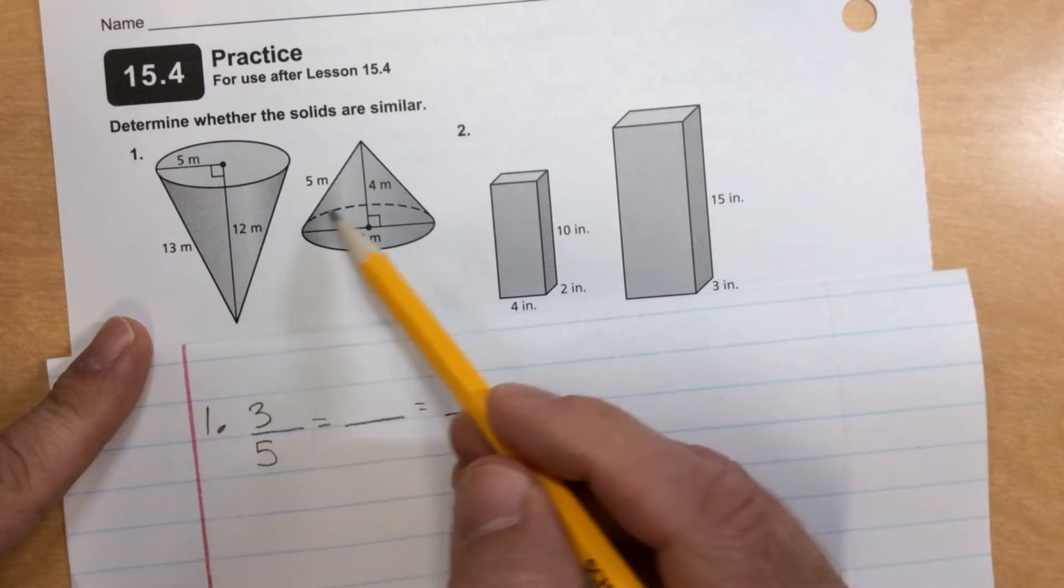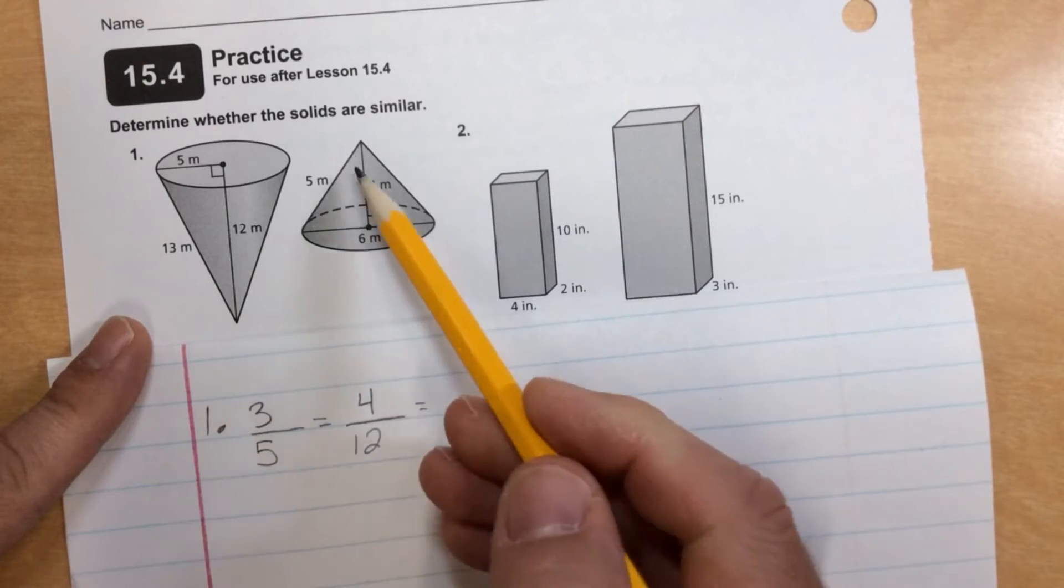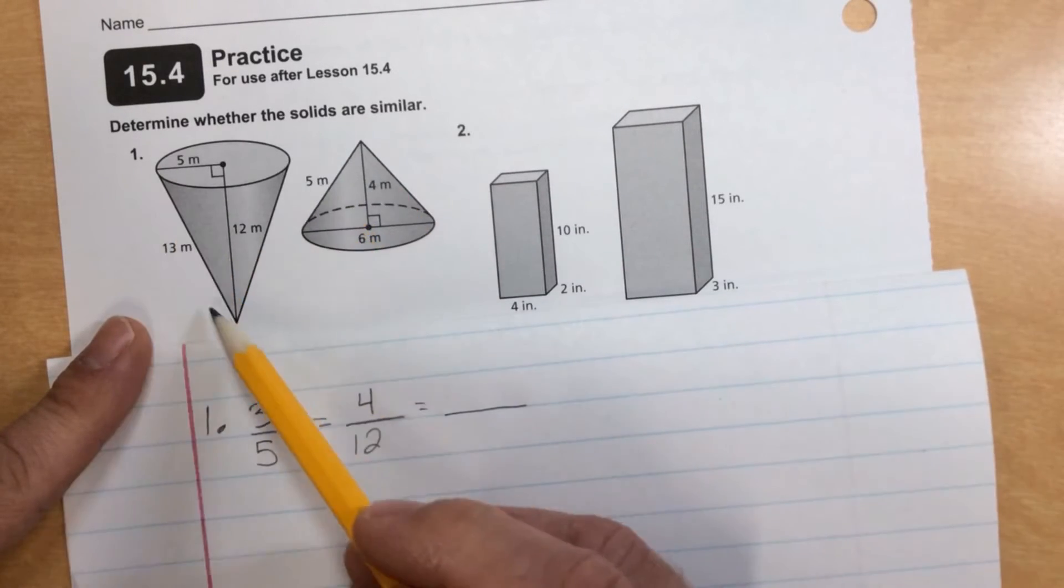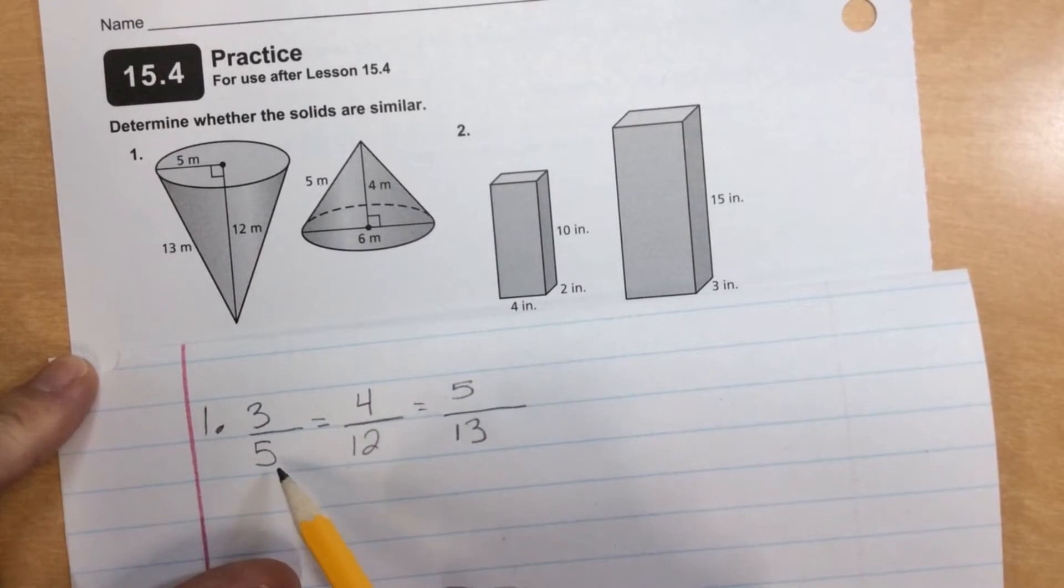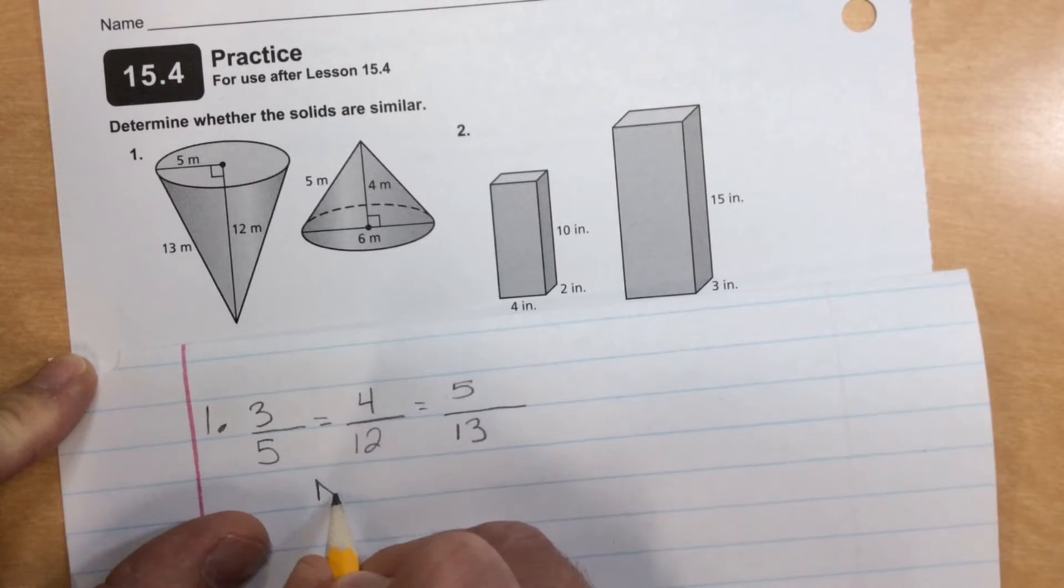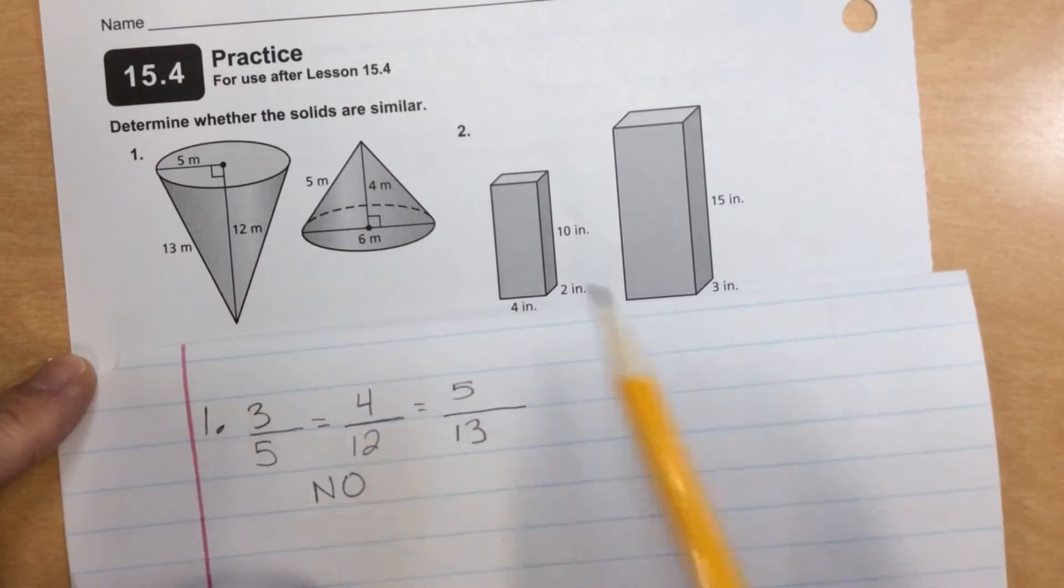Height over height would be four over 12, small over big, and then slant height five over slant height 13. And we can do cross products here really quickly and see that this is 20, and this is 36. So that doesn't work out. This is 60, this is 52. So that definitely doesn't work out. Okay, none of these are proportional. And so this is, no, it is not. These are not similar solids.